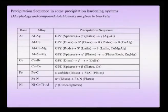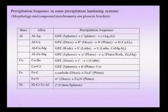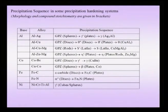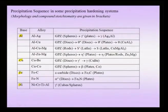This precipitation hardening process is industrially very relevant and found in a variety of systems that are precipitation hardenable. The common characteristic is a sloping solvus line allowing quenching from high temperature to produce a supersaturated solid solution, which can be aged to produce zones and precipitates. Common examples include aluminium-based alloys, copper-based alloys, iron-based alloys, and nickel-based alloys.